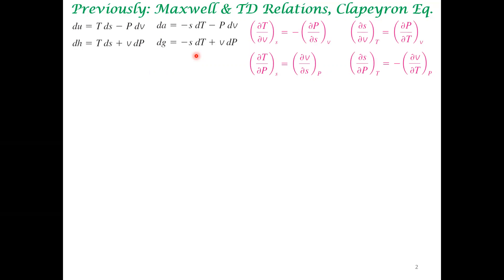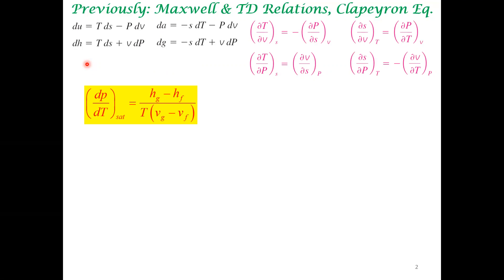Previously, the general logic is that we start with an exact differential. For example, in the case of the Clausius-Clapeyron relationship, we started with dH. We looked at a system undergoing phase transition converting from a liquid to gas, and we started with dH at a particular experimental condition. After starting with the exact definition, we used a Maxwell relationship.